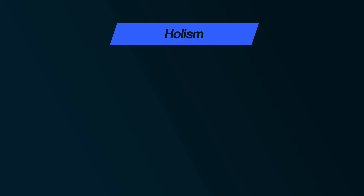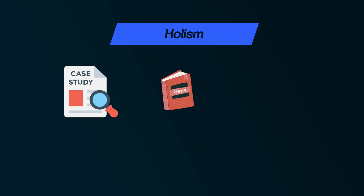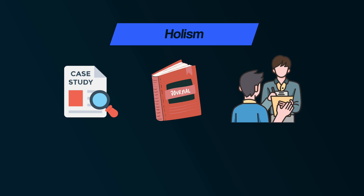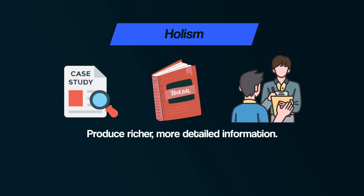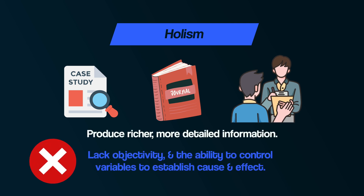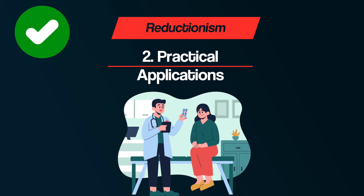Furthermore, reductionist approaches also fit with the scientific method in terms of being objective. For example, with behaviorism and the Skinner box, Skinner was able to objectively count how many times the rat pressed the lever. In contrast, holistic approaches prefer case studies, diaries, and interviews, which — whilst producing richer, more detailed information — lack objectivity and the ability to control variables to establish cause and effect.